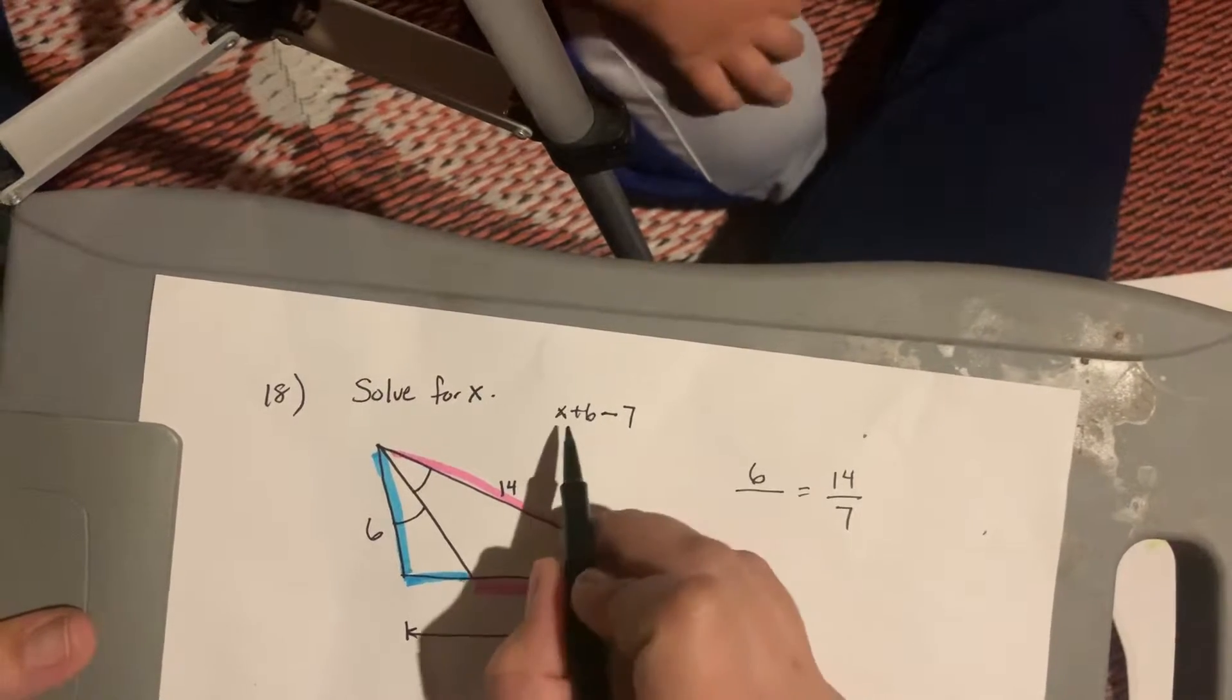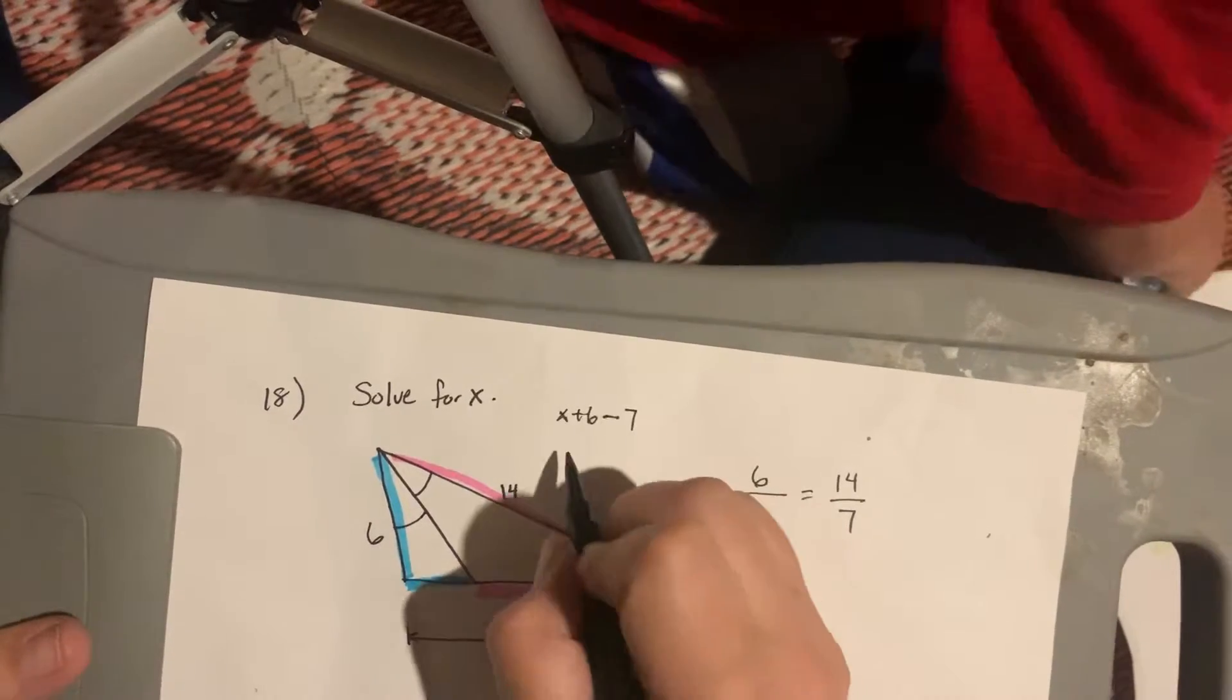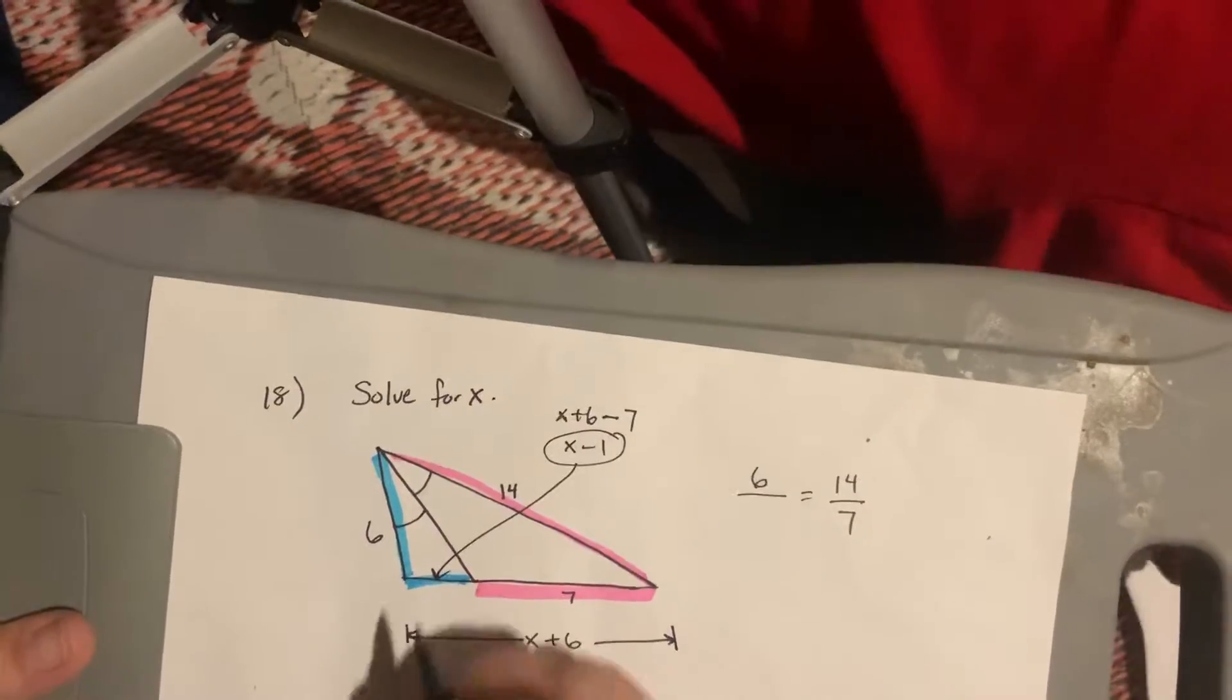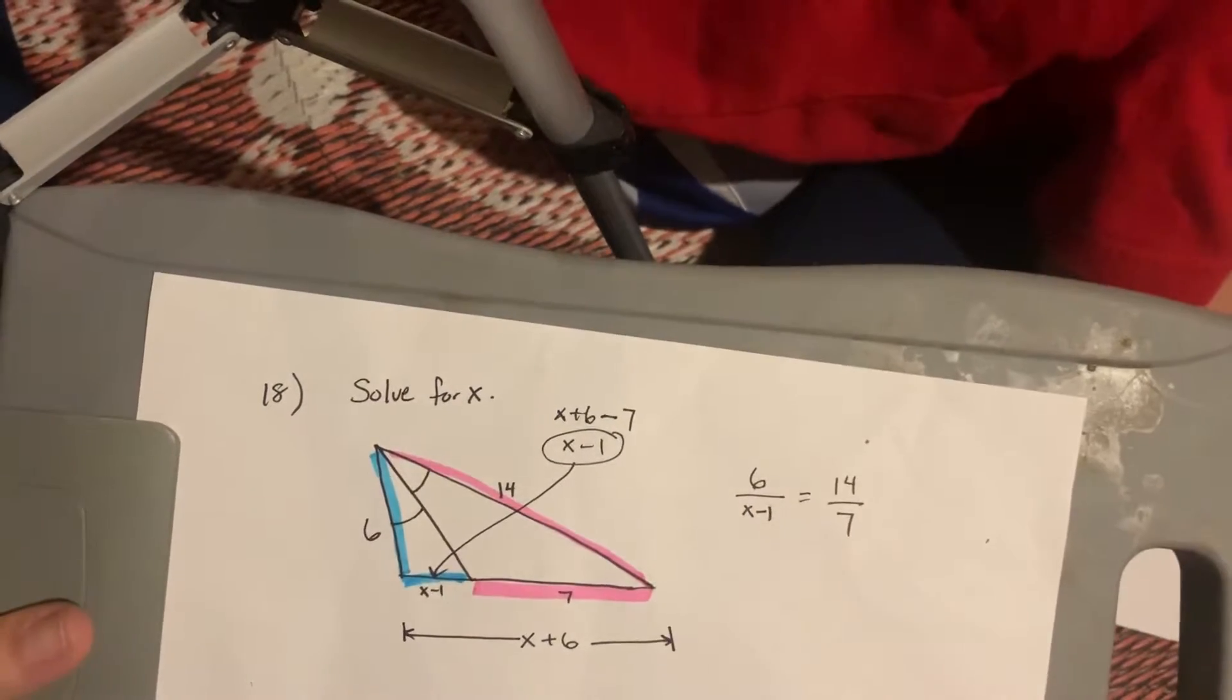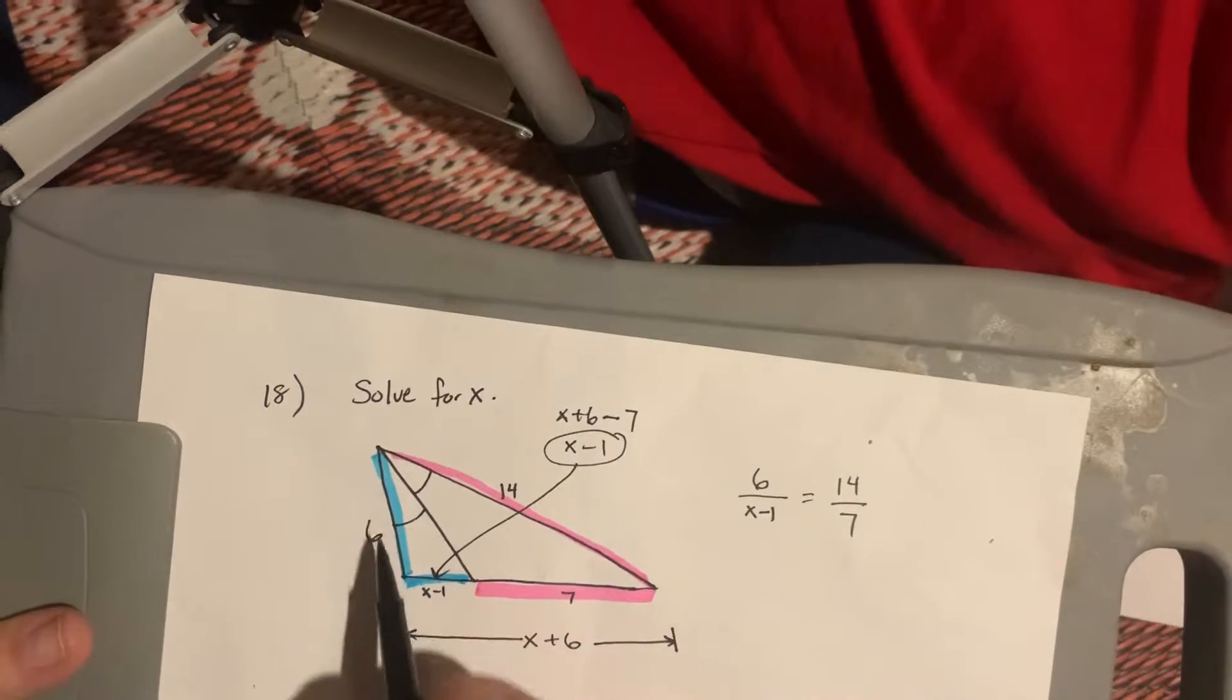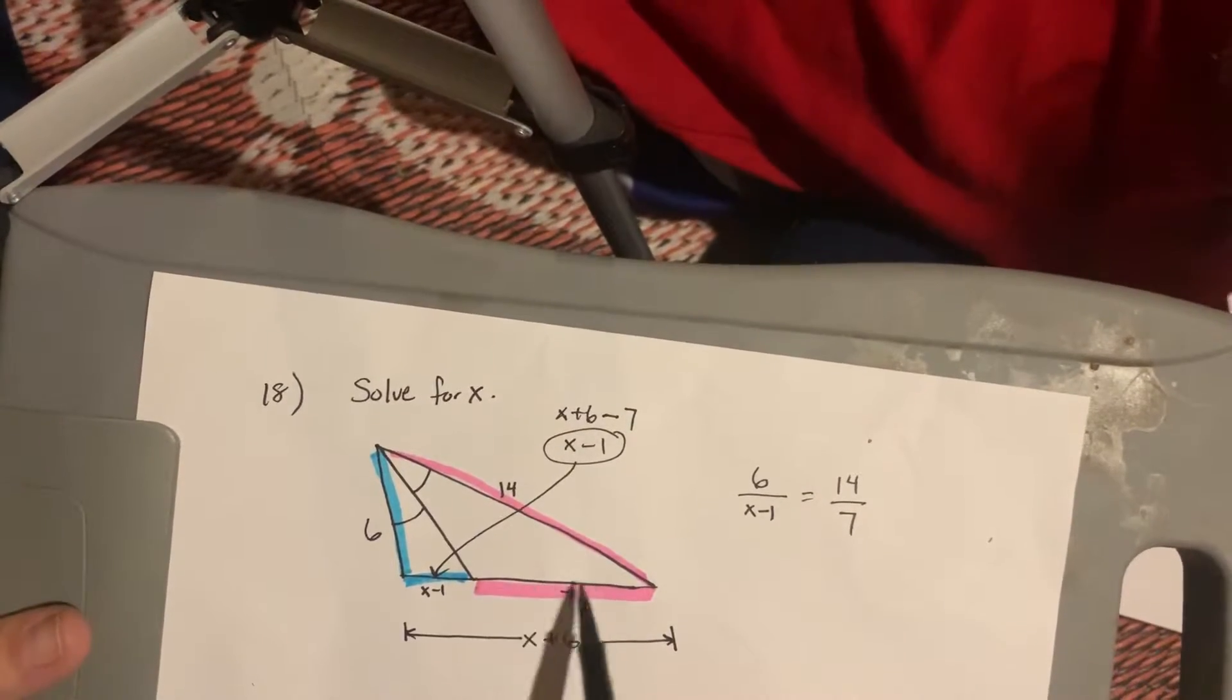So, if I do x plus 6 minus 7, it's really just positive 6 minus 7, which is negative 1. So, it's x minus 1. And, that is what I can write here on this little part. So, I can put x minus 1 in this spot on the proportion. So, it's blue over blue equals pink over pink. Side over the split side, and the other side over the other split side.